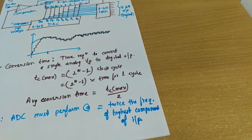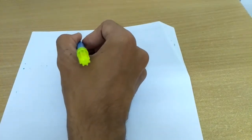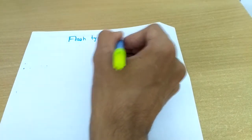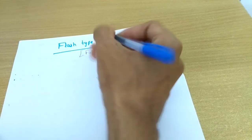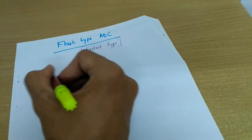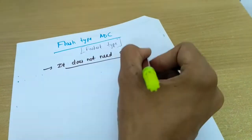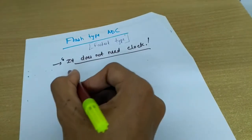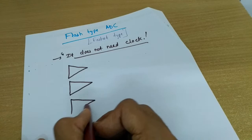Now let's move to another type — flash type ADC. The first point is that it is the fastest of all ADC types. Another important thing is that it does not require a clock — conversion is happening continuously. The only disadvantage, which you will see in a moment, is that it requires a large number of components.